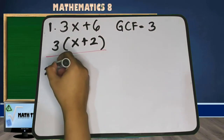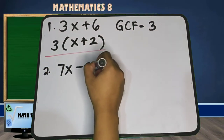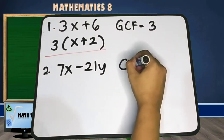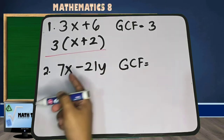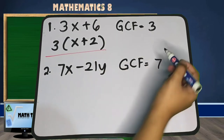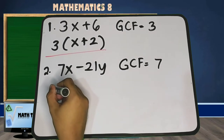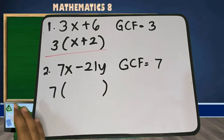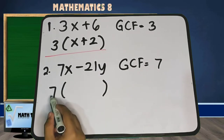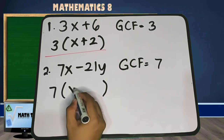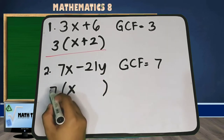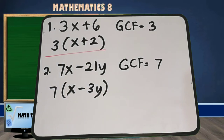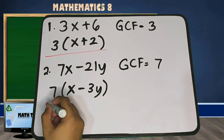Let's have number 2: 7x minus 21y. Identify the greatest common factor. The GCF is equal to 7. So let's factor out 7, and then divide each term by 7 to find the other factor. 7x divided by 7 is x. Negative 21y divided by 7 is negative 3y. So our factor now is 7 times the quantity x minus 3y.